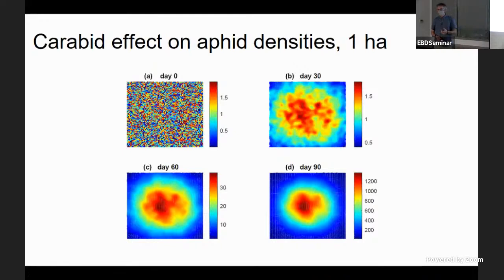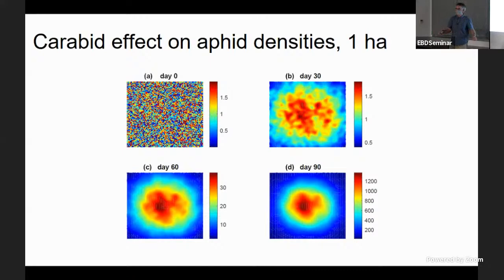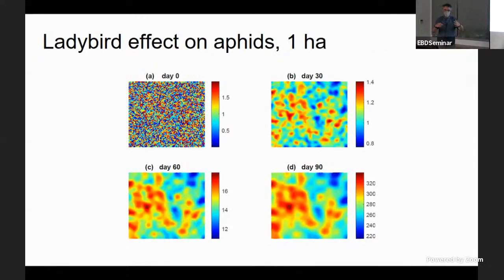Looking at spatial heat maps: brighter colors indicate higher aphid densities, cooler blues indicate lower densities — note the scale shifts. At one hectare with carabid beetles coming in from the field margins, you can see over time they corral all the aphids in the middle of the field. The aphids are surrounded, so they can reproduce like crazy and build up a population in the center. This has clear implications for pest control — a spatial element that depends on carabids coming in from weedy margins or forest edges.